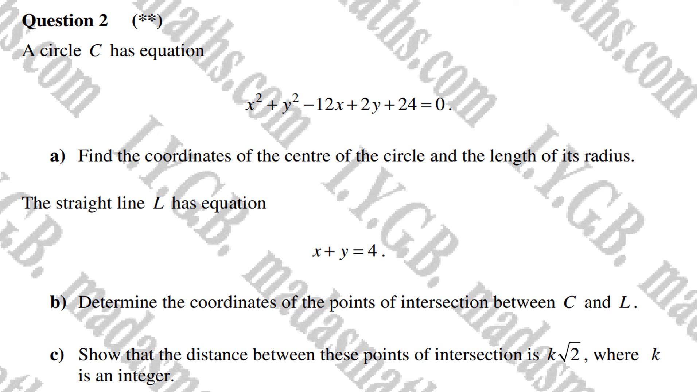This question is worth around eight to ten marks. Question two: A circle has equation x squared plus y squared minus 12x plus 2y plus 24 equals zero. Part a is a classic question that's likely to appear on your exam tomorrow. Find the coordinates of the center of the circle and the length of the radius.